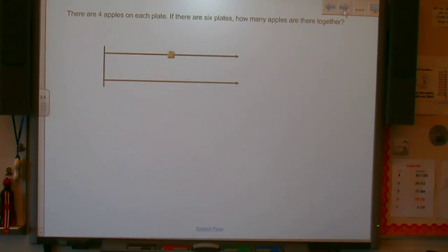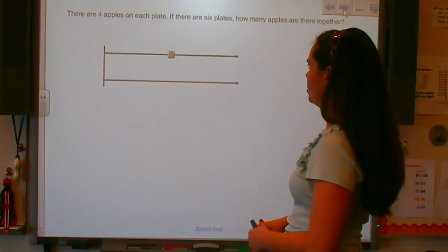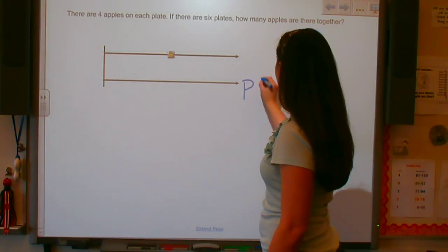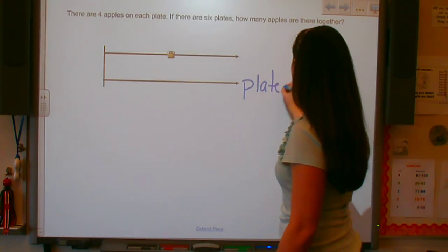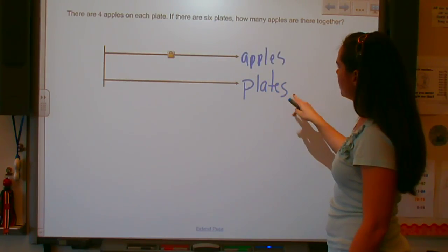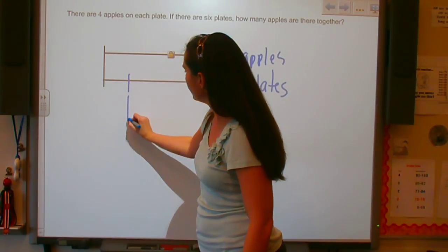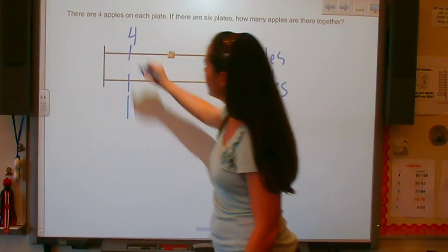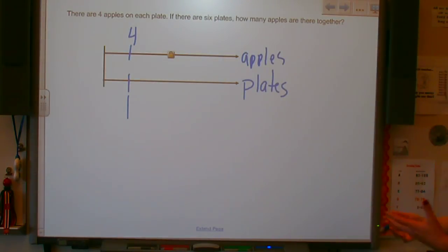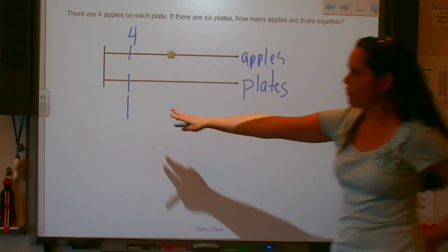One line in our double line is going to be for the value for plates and the other line is going to be where we're going to graph our information for apples. So I have plates and I have apples. I put plates on the bottom because if I have one plate, then I have four apples.